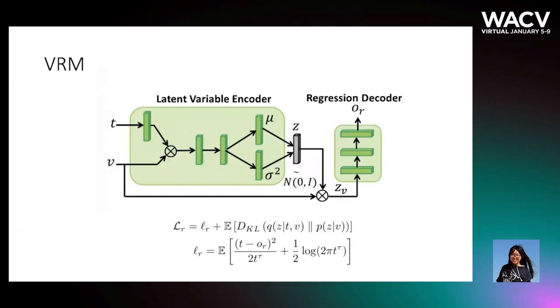This Variational Regression Module is built based on the conditional variational autoencoder. Basically, the input is the starting moment and the output of the visual query encoder. During training, we address the regression task as a generalization task.